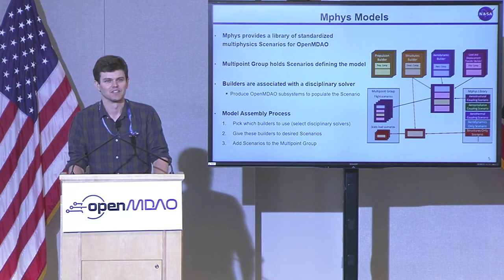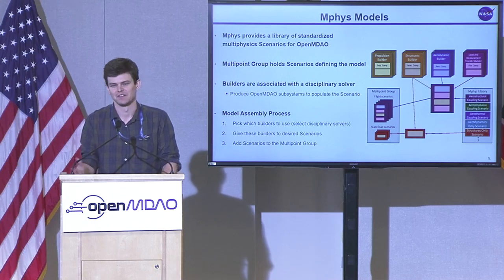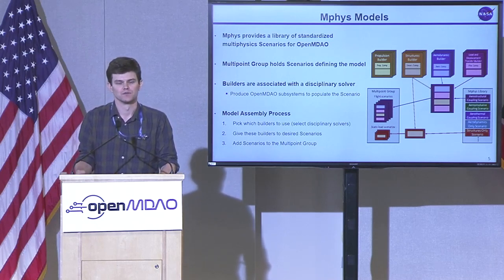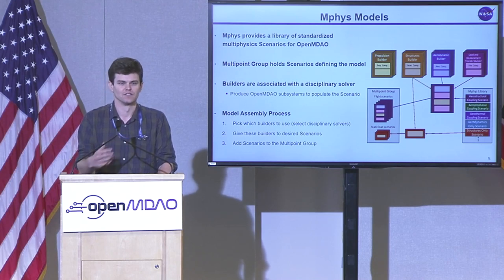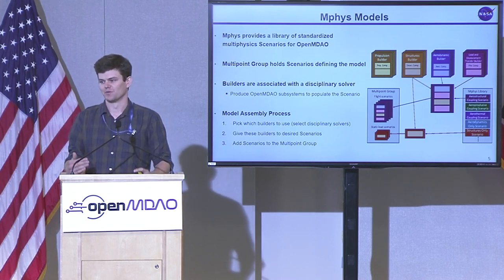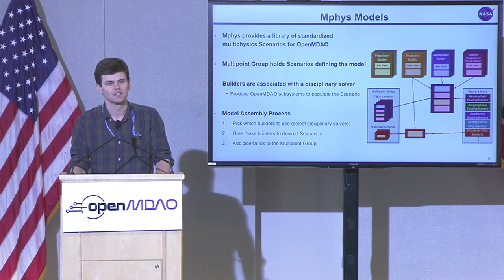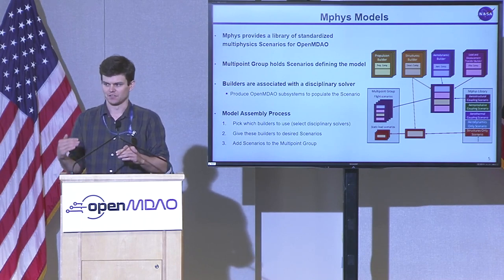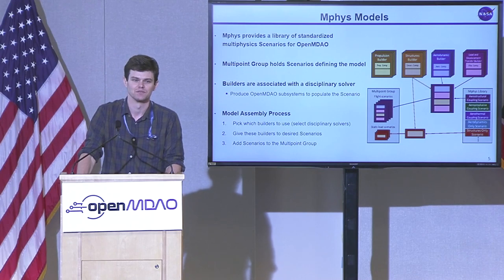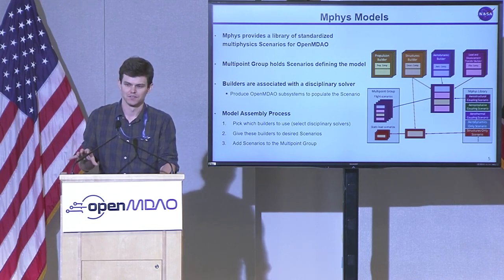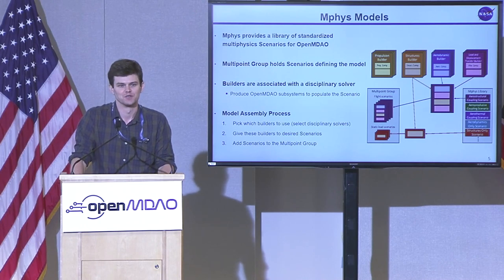MFIS provides a library of standardized multi-physics scenarios — aerostructural, aeropulsive coupling, load constraints with structures only. We take these from MFIS and assemble them into a multi-point optimization, where a multi-point group holds all our different scenarios. We populate this with components from different solvers using Python classes called builders, defined outside of OpenMDAO. These builders have functions that query to pull in the correct components to populate the models according to our standards. The process: pick your scenarios, pick your builders, give the builders to the scenarios, and add them to your multi-point group, which is basically just an OpenMDAO group.